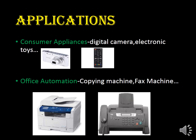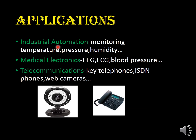The next topic is applications. The first one is consumer appliances — digital camera, electronic toys, remote. These are all embedded systems we use in our day-to-day life. Then, office automation: in the office, we use copying machines, fax machines, etc. This comes under office automation. Industrial automation means monitoring temperature, pressure, humidity, etc. Then, medical electronics: EEG, ECG, blood pressure measurement — we use embedded systems for these.